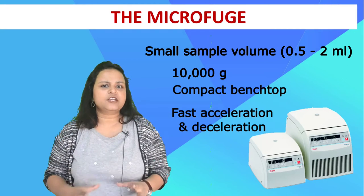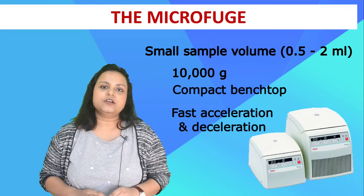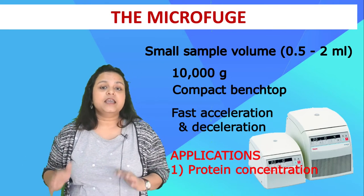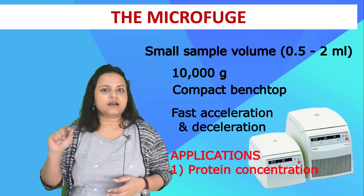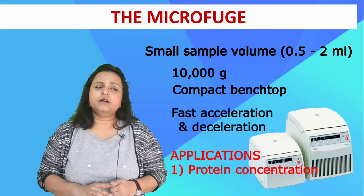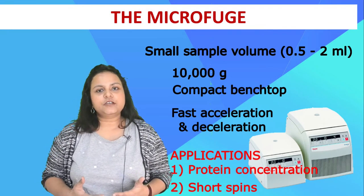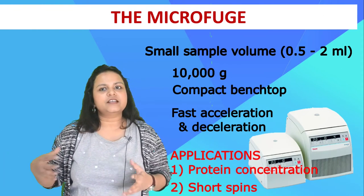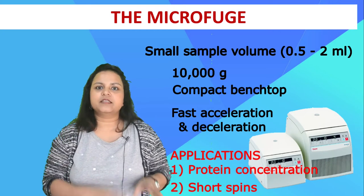The main applications for microfuges include protein concentration — for instance, after purifying a protein by column chromatography, you can concentrate it 10 to 20 fold in a single spin using tube-based concentrators or micro spin columns equipped with a filter. The second application is for molecular biology protocols like DNA isolation or RNA extraction, which usually call for many short centrifugation steps of about one minute. Having a handy microfuge close to your workspace saves a lot of time compared to walking to a large, distant centrifuge.